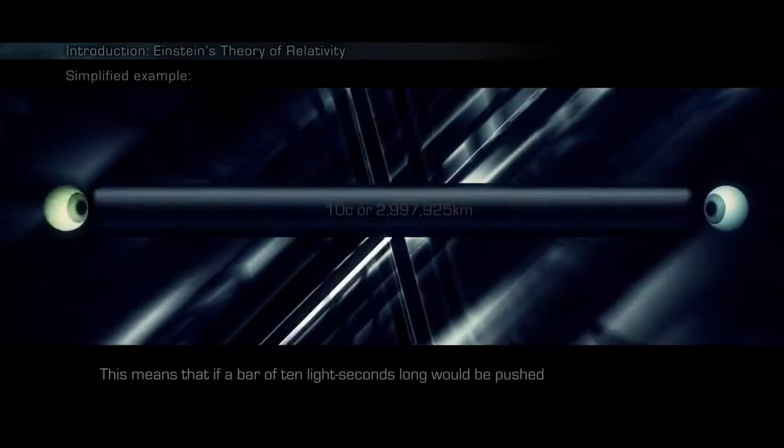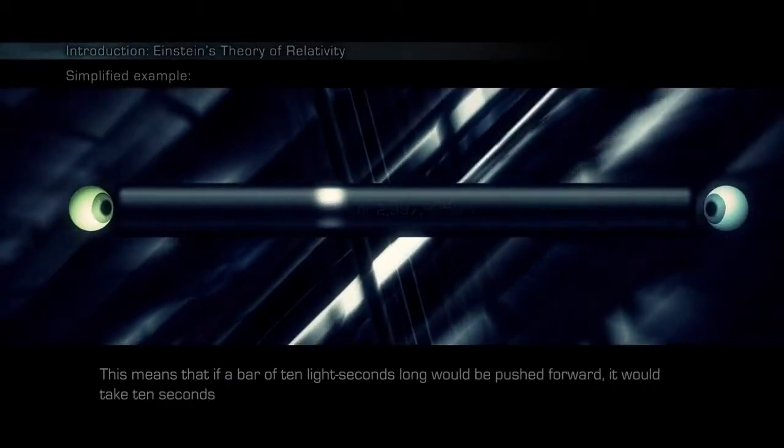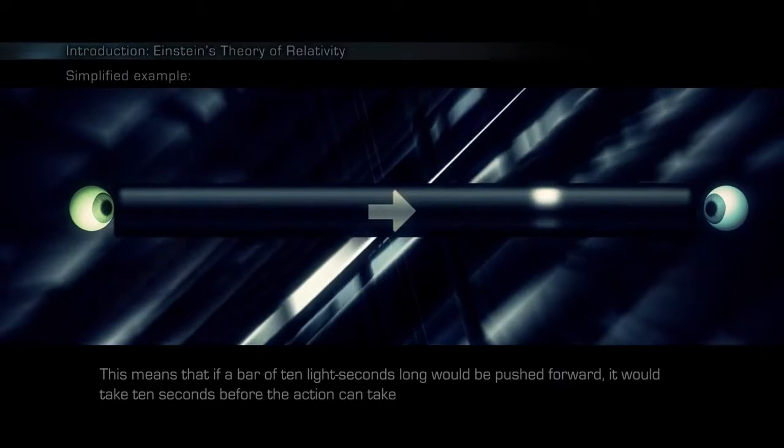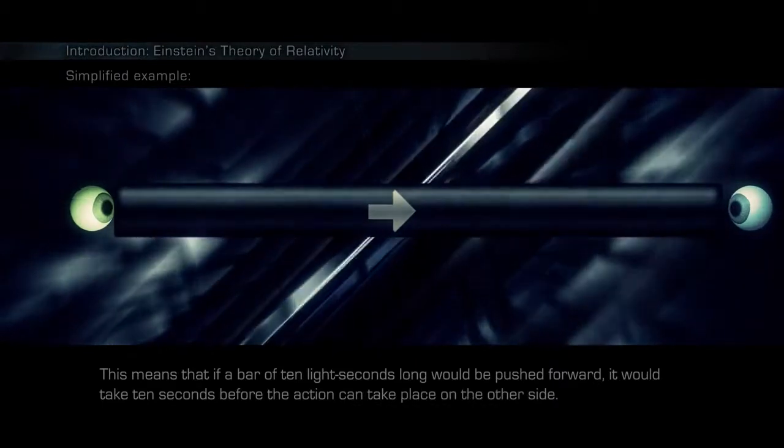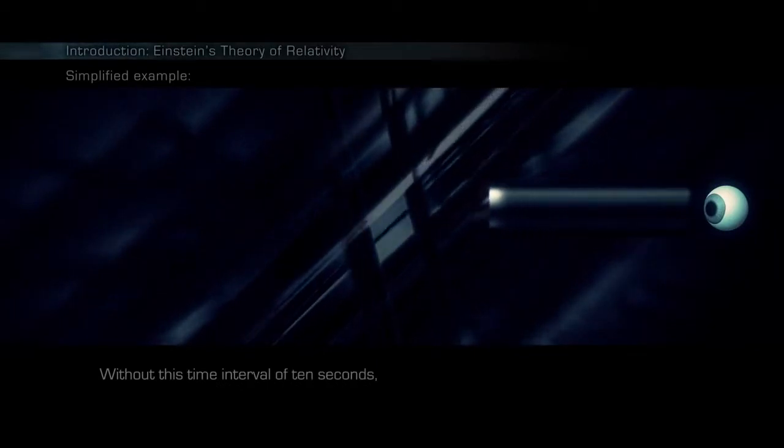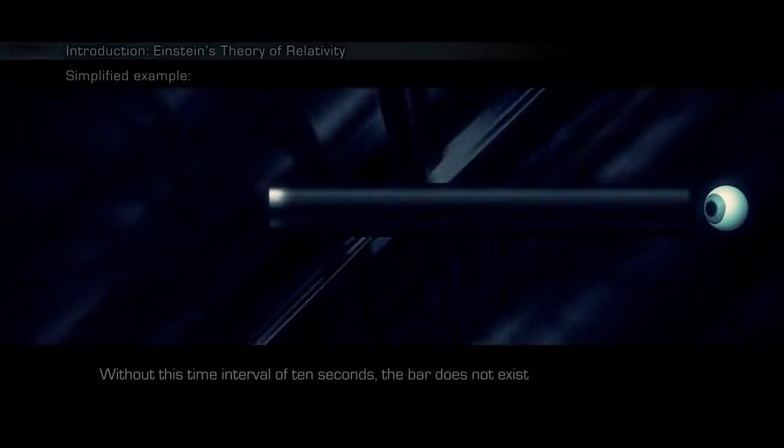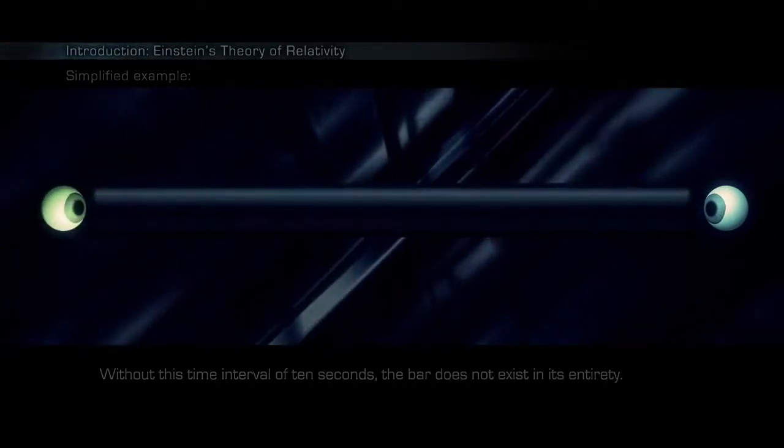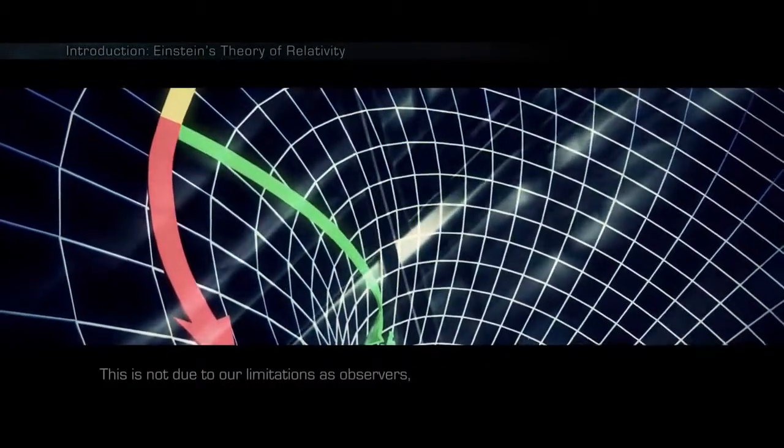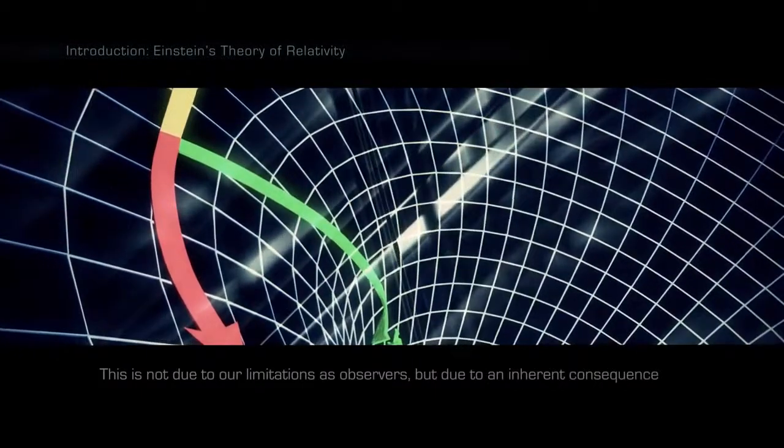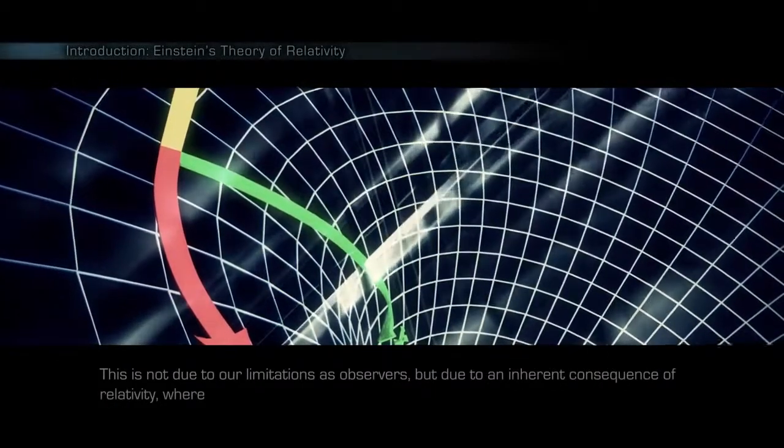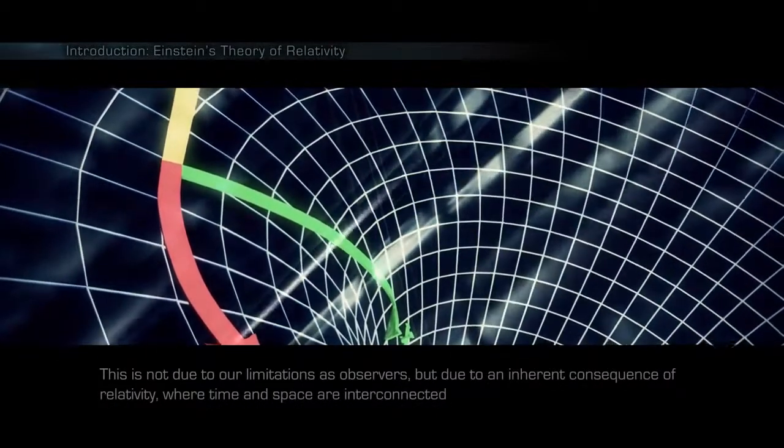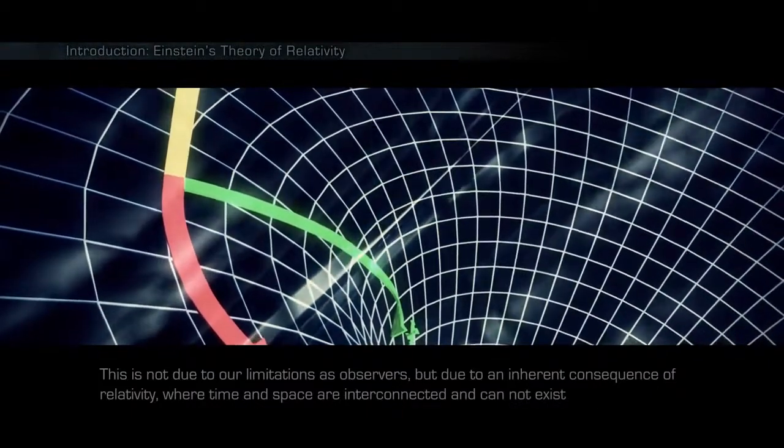Nothing can travel faster than the speed of light. This means that if a bar of ten light seconds long would be pushed forward, it would take ten seconds before the action can take place on the other side. Without this time interval of ten seconds, the bar does not exist in its entirety. This is not due to our limitations as observers, but due to an inherent consequence of relativity, where time and space are interconnected and cannot exist without each other.